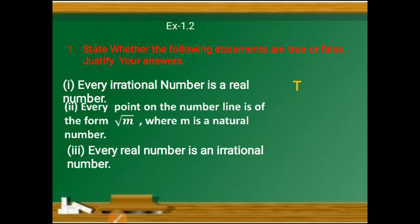The second question is: every point on the number line is of the form √M, where M is a natural number. The answer is false. Natural numbers start from one and include only positive numbers, but on the number line you also have negative numbers. So this answer is false.